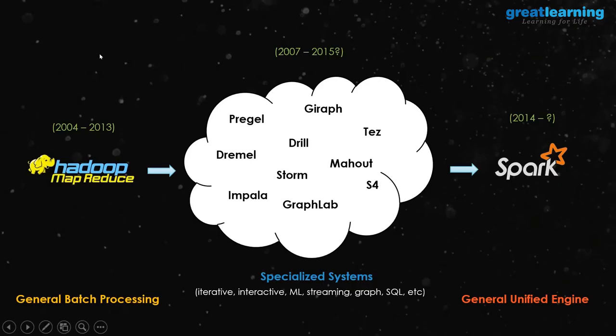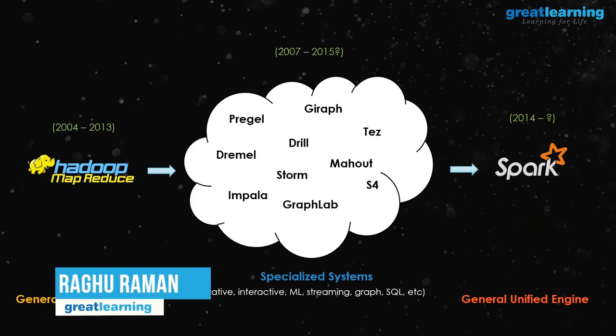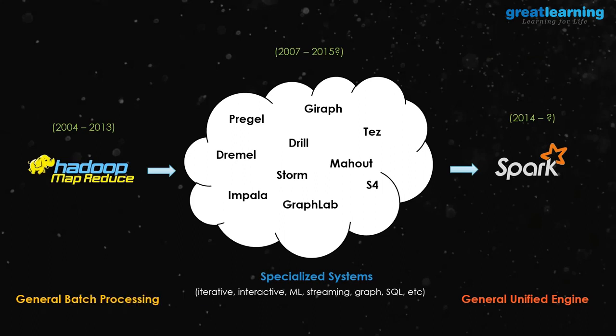This is the slide you need to understand if you want to learn Spark, and it is very important. Somewhere around 2004, Hadoop came, and with Hadoop you got something called MapReduce.